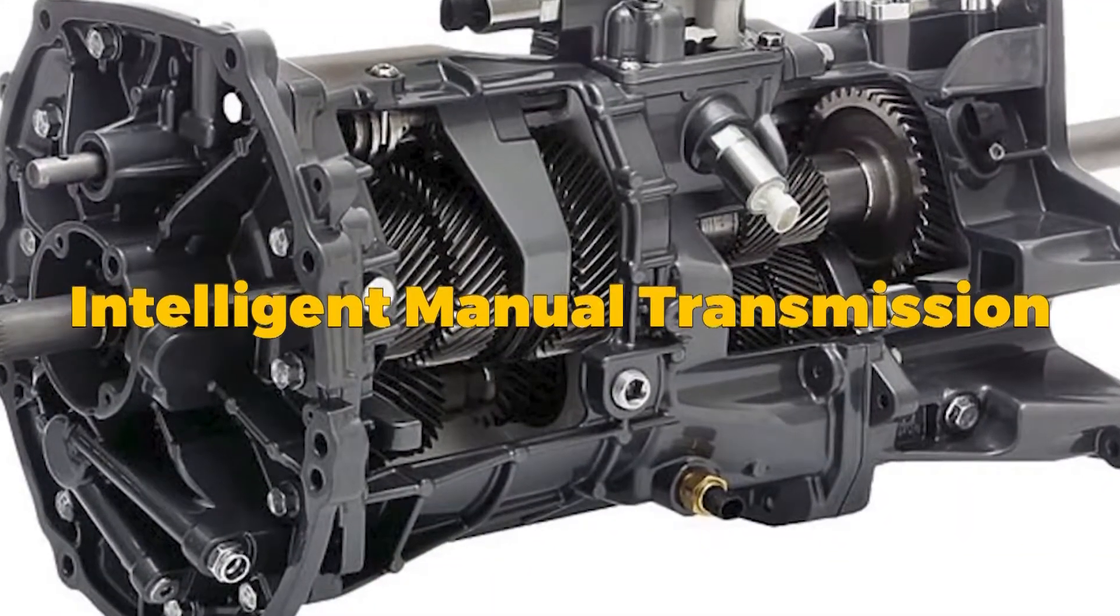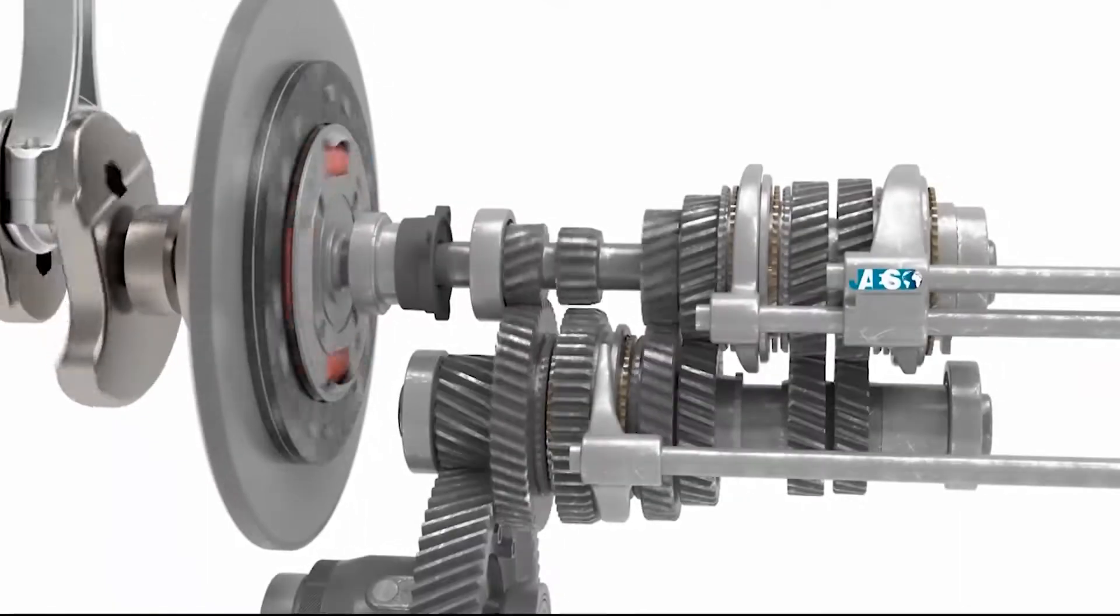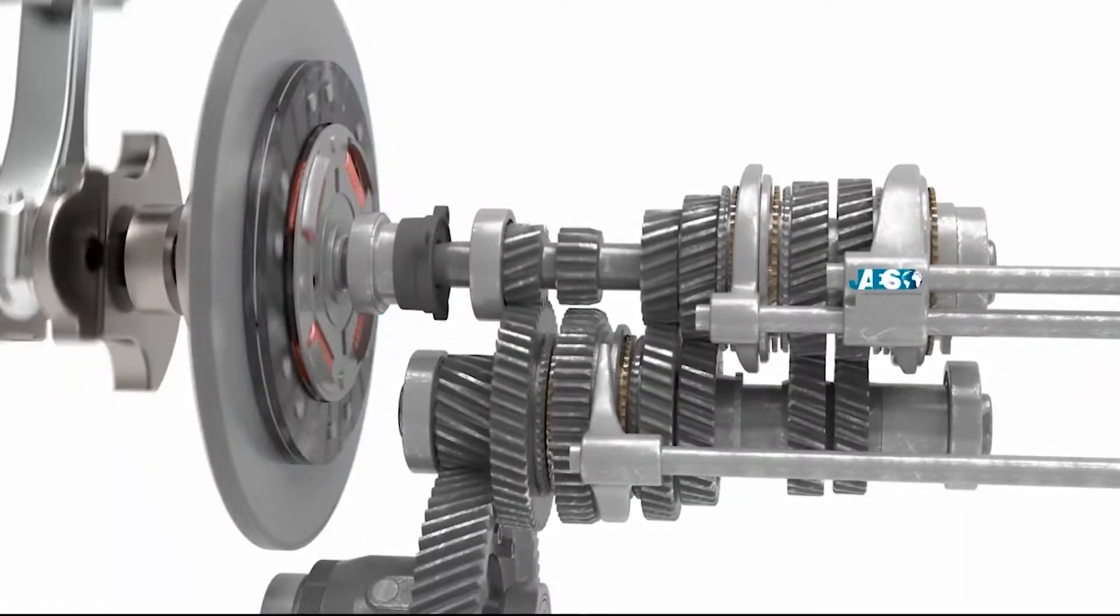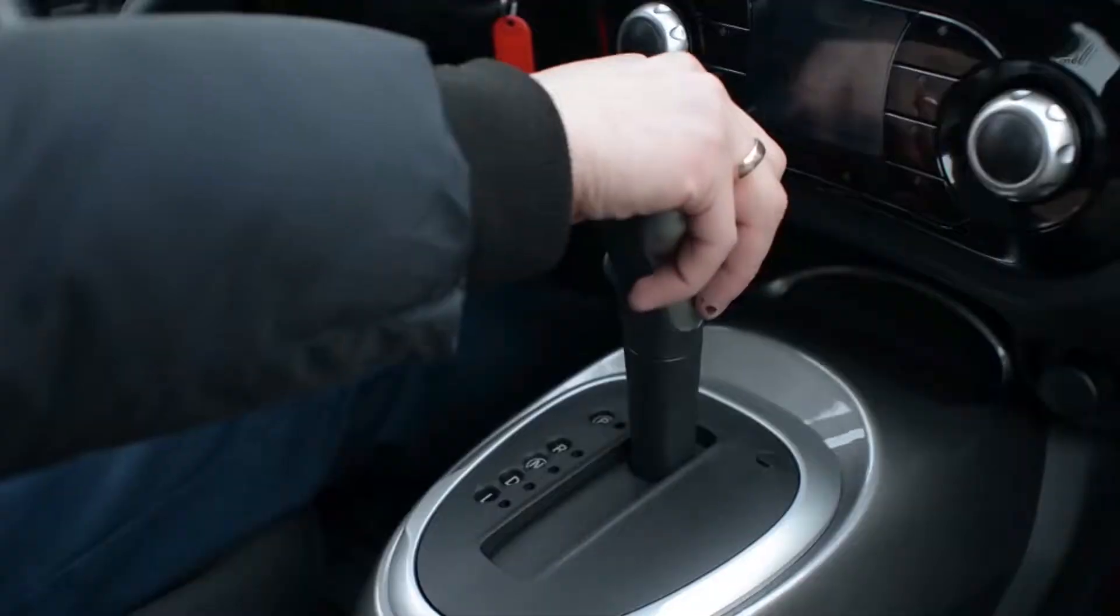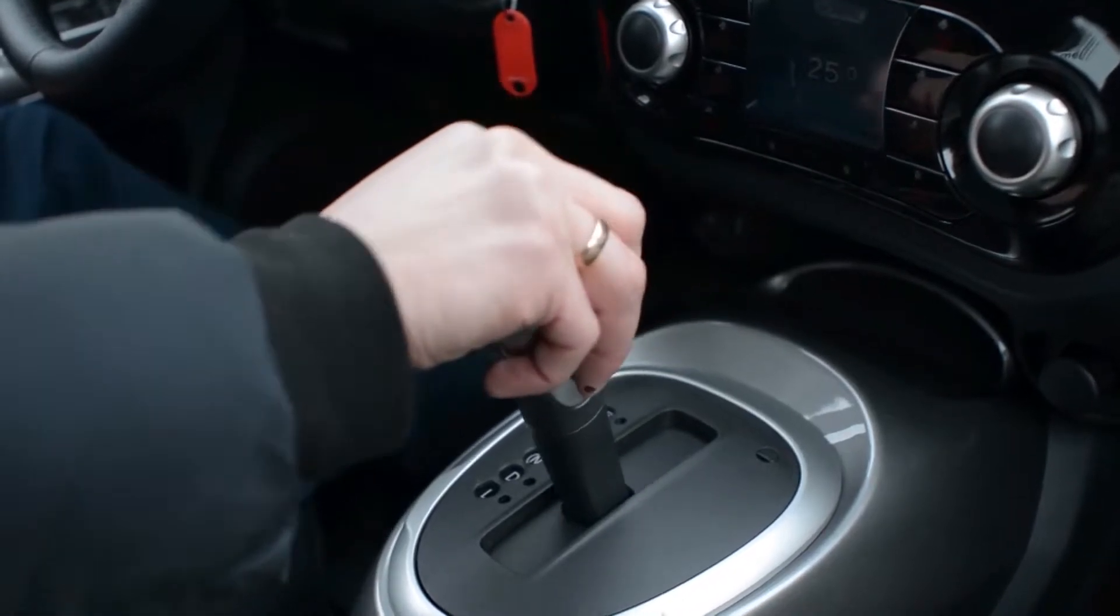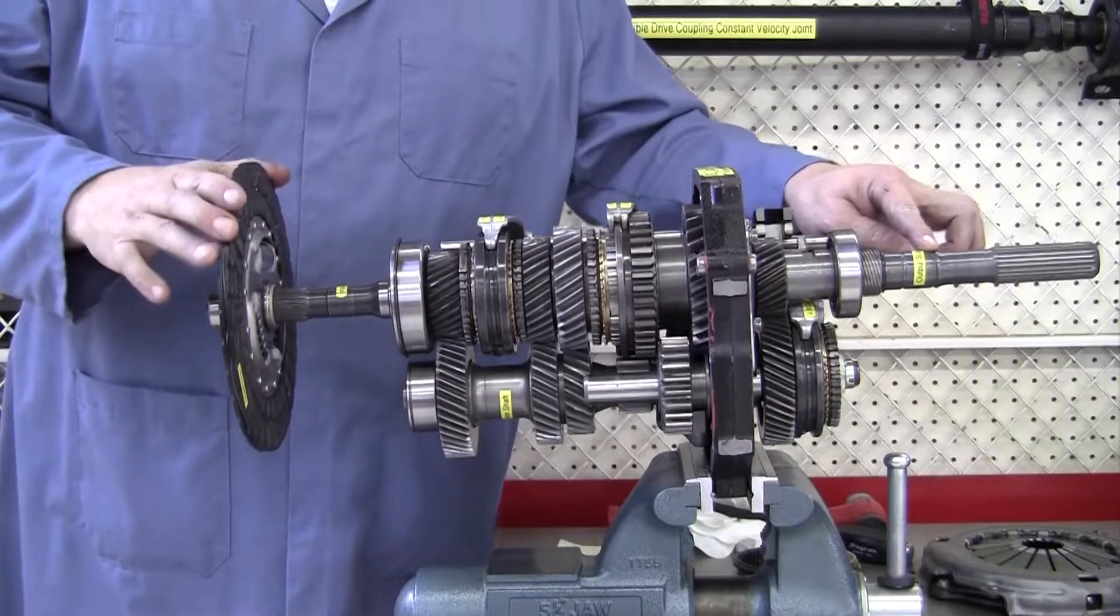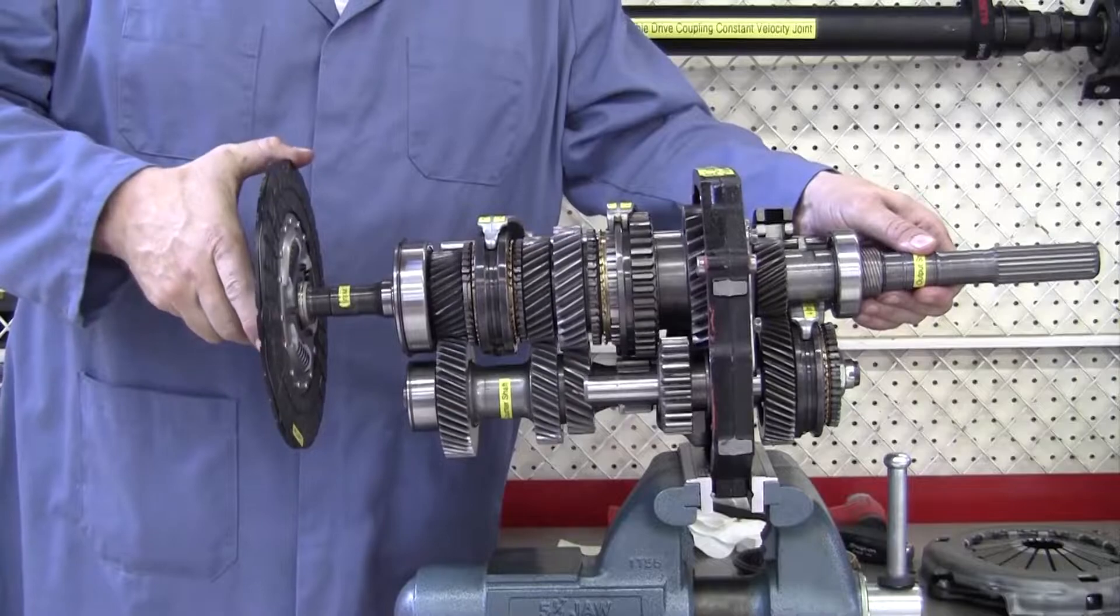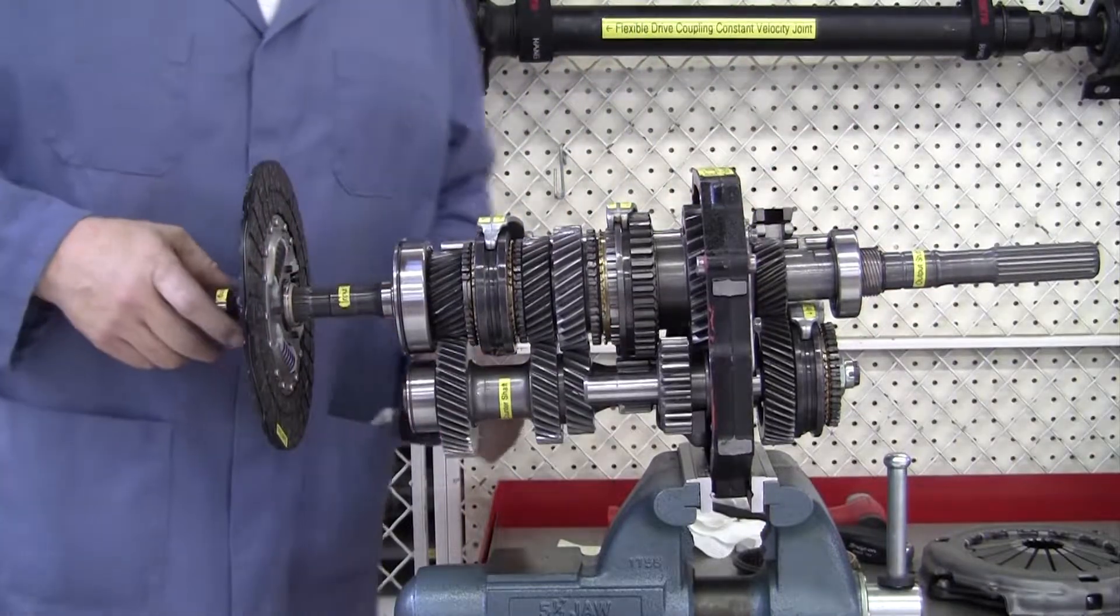Intelligent Manual Transmission. The IMT is a clutchless manual transmission in which the driver must manually operate the gear lever to upshift or downshift while the clutch operates automatically. The transmission gear shift lever is connected to the intention sensor, actuator, and transmission control unit in an IMT.